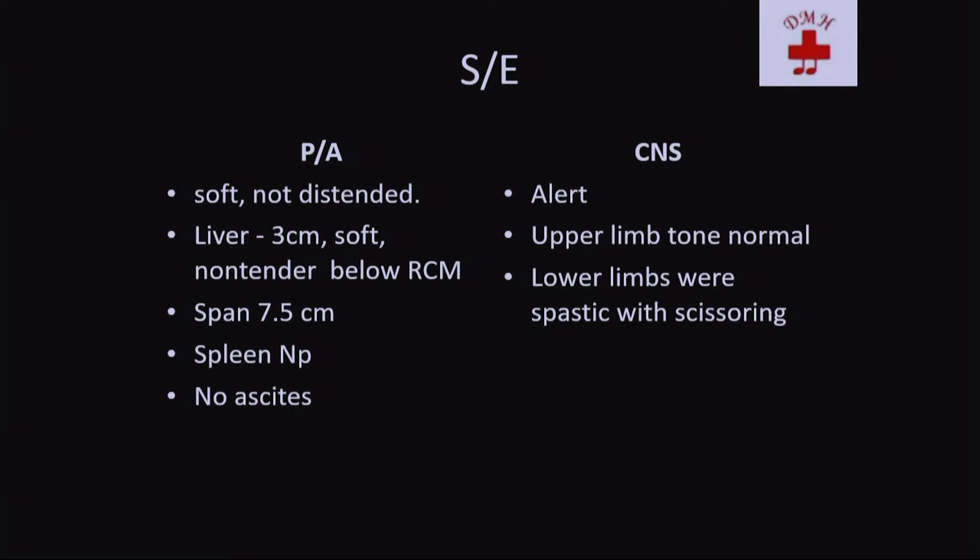CNS-wise, child was alert. Upper limb tone was normal, lower limbs were spastic with scissoring gait. The general examination added to the history: there was growth failure, lower limb muscle tone was more than upper limb, and there was hepatomegaly which was soft and 7.5 cm. The child had doll-like faces and was below the 3rd centile — so marked growth failure was present.